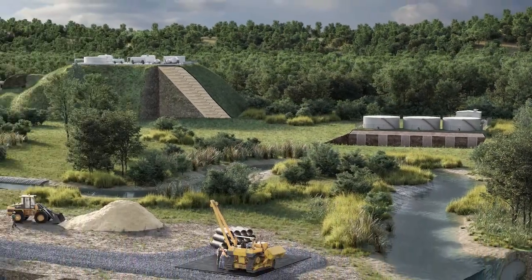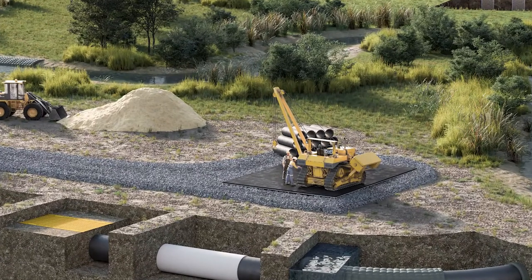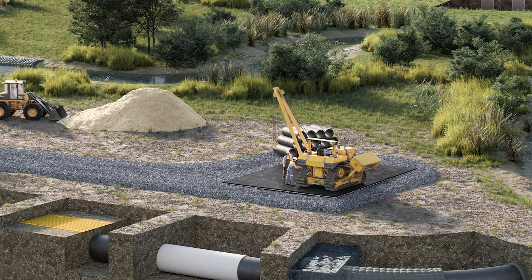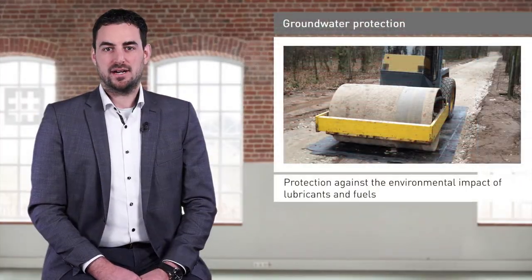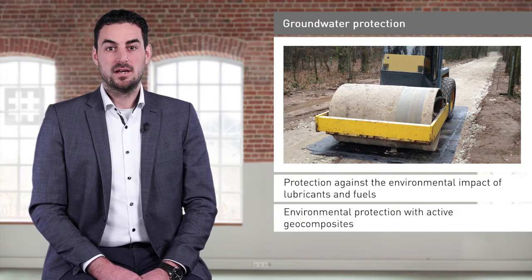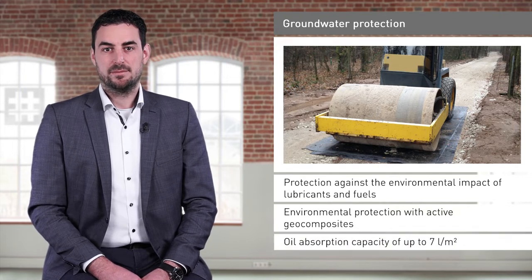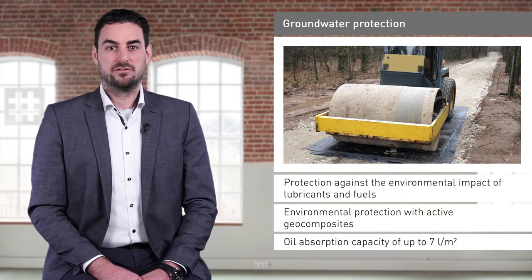Finally, I would like to present a very simple way to reduce the environmental impact of lubricants and fuels on construction sites with the help of active geocomposites. Construction machinery is usually refueled on site and if possible also serviced there. In order to protect the underlying soil against the entry of contaminants and especially against lubricants and fuels, a trafficable active composite material can be installed underneath these areas. This composite material with an oil absorption capacity of up to seven liters per square meter binds the oils and fuels and thus prevents them from entering the environment.